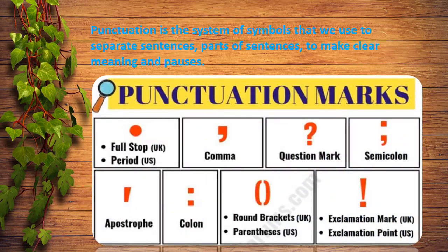Let's see what punctuation is. Punctuation is the system of symbols that we use to separate sentences and parts of sentences, to make clear meaning and pauses. In the previous chapters we learned about sentences and types of sentences. There we also used some of the punctuation marks. Now let's learn the punctuation marks.